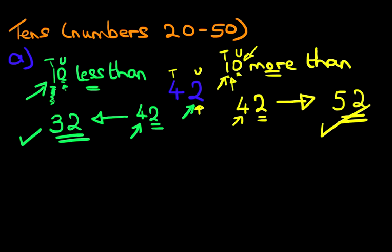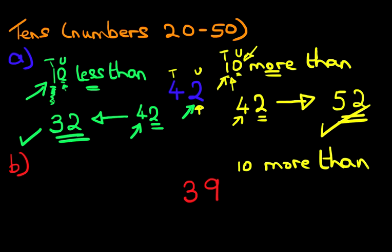So we've done that — nice and easy. Let's have a look at one more example so that we fully consolidate our knowledge on this. Let's suppose we have this number — 39. On this side, we're going to do 10 more than. 10 more than 39. We start with number 39, we're doing more than so we're going to count forwards. This 9 is not going to change because this is a 0.